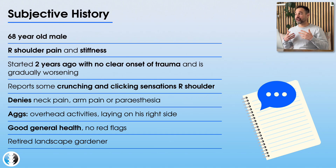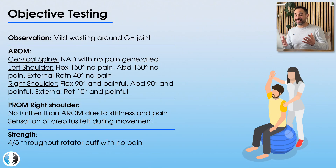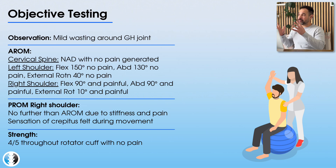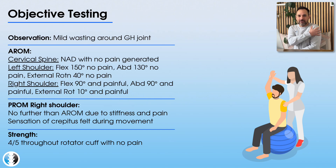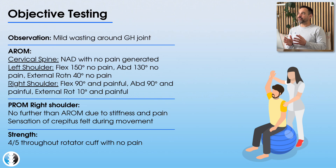This gentleman has good general health with no red flags and previously worked as a landscape gardener, now retired. Moving to the objective assessment, we have a look at the patient's shoulder and find there's a mild loss of muscle mass around the shoulder, which can occur when a patient struggles with elevating their arm for a period of time. Next, we look at active range of movement.